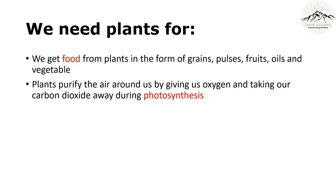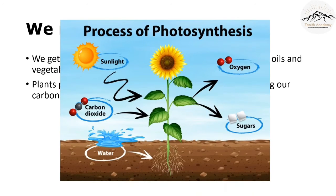Plants purify the air around us by giving out oxygen. This is done with the help of a process called photosynthesis. Photosynthesis is a process where a plant produces its own food with the help of sunlight and carbon dioxide from the atmosphere, and in turn it gives out oxygen.